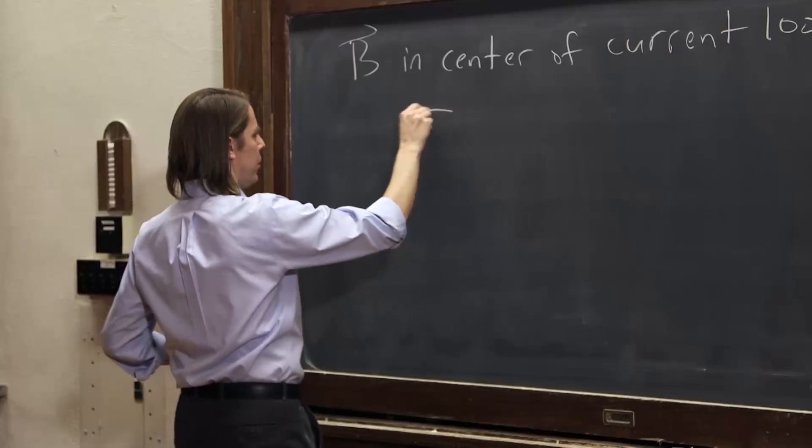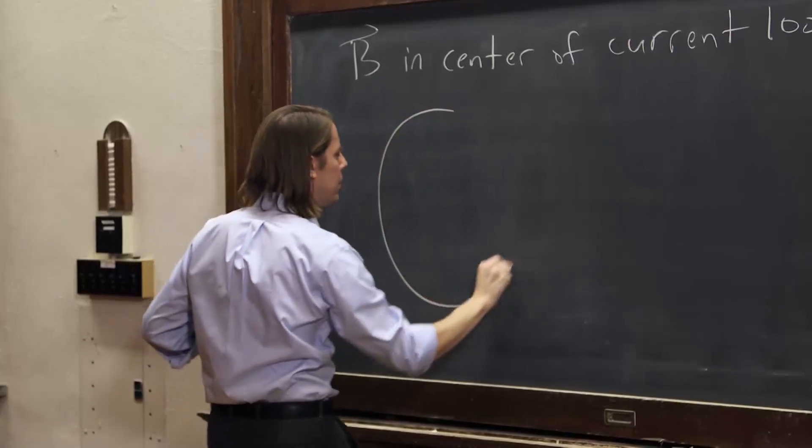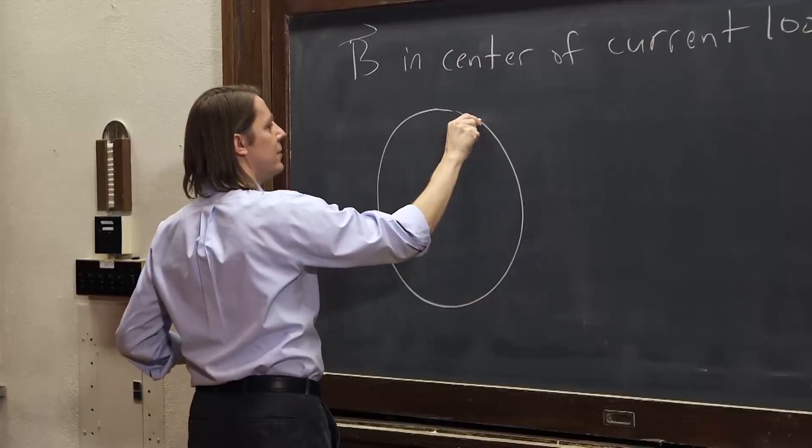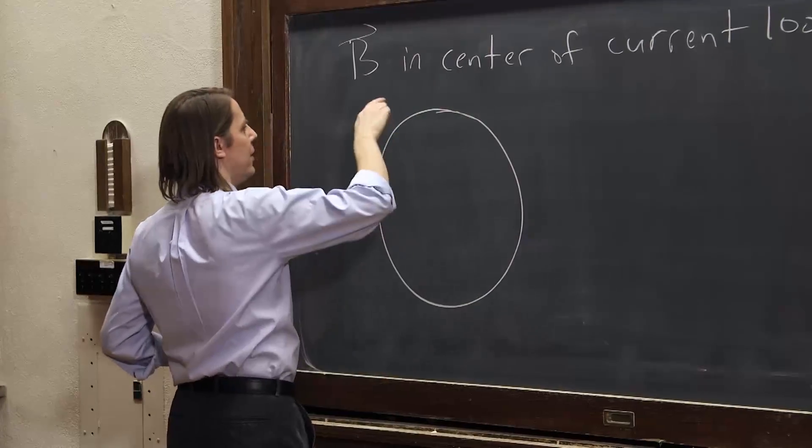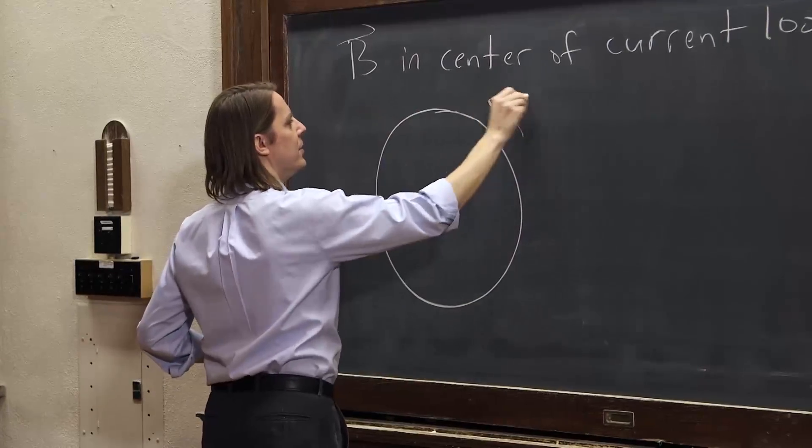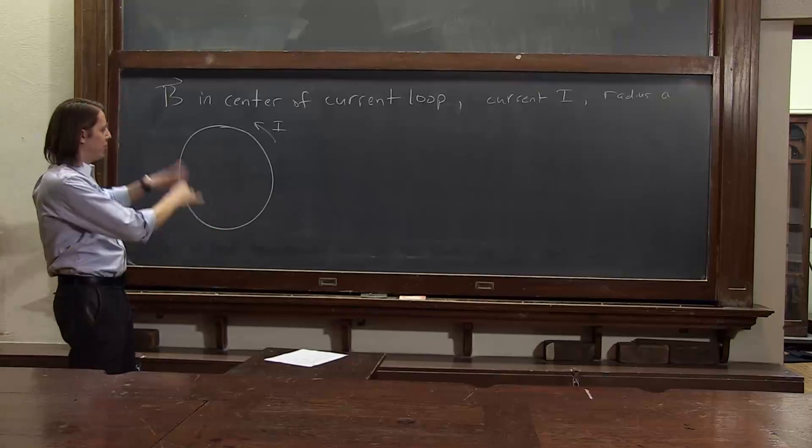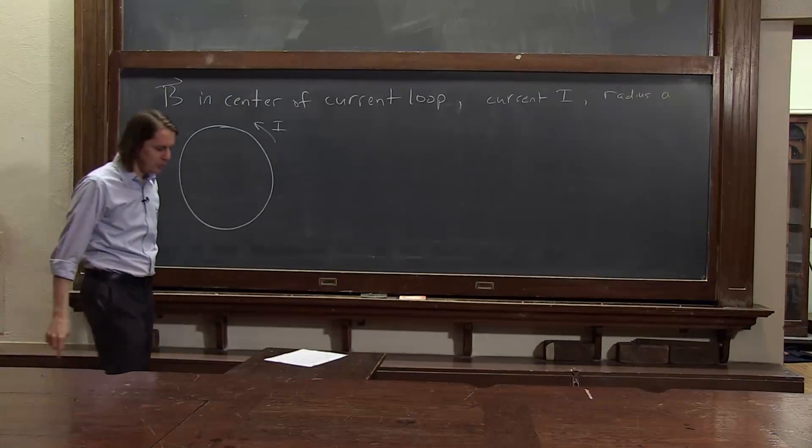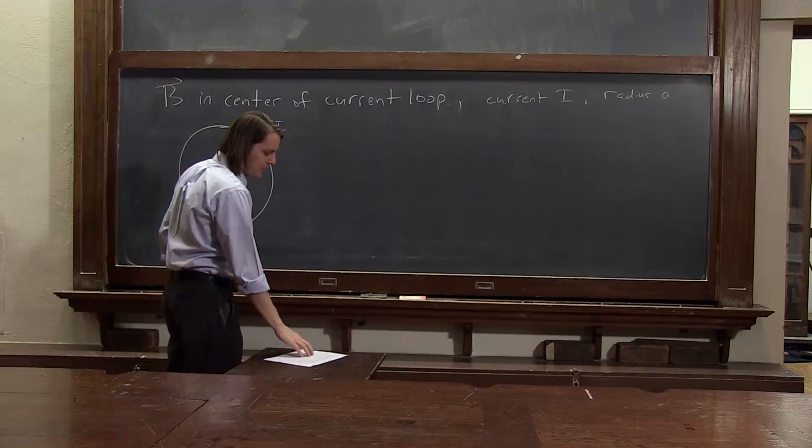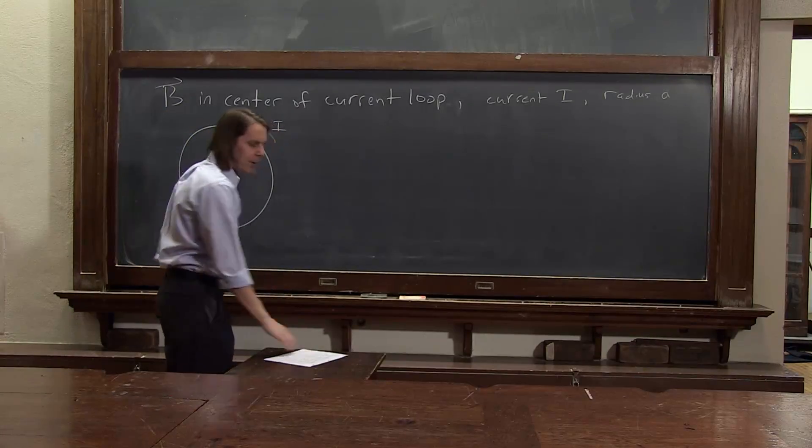So here we go, let's go ahead and draw our current loop like this. And the current, we'll say, is going around in that direction. Where is it coming from? I don't know. There's no battery. It's just a current loop of a superconducting wire, say. No resistance, so the current will go on and on forever.